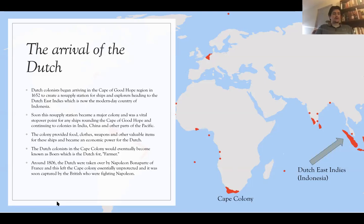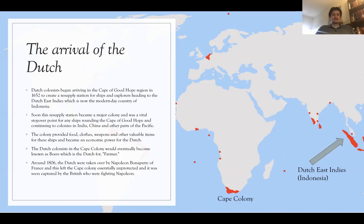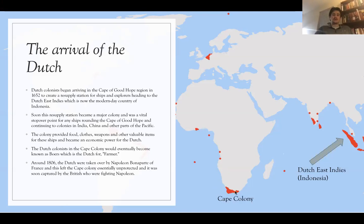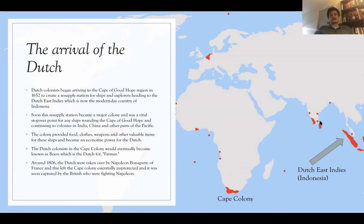It would be a Dutch colony for around 200 years until 1806, when the Netherlands were taken over by Napoleon Bonaparte of France. Britain happened to be fighting Napoleon at the time, and so they saw the Dutch surrender as a chance to expand their African possessions. They acquired the Cape Colony as part of the treaty that ended the Napoleonic Wars — officially acquiring it in 1815 as part of their peace agreement.